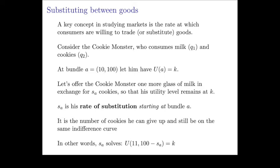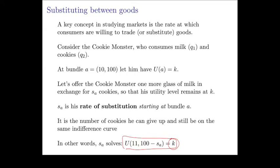In other words, it's the solution to the equation: U of 11 glasses of milk and 100 minus SA cookies is still equal to the utility level K. Now this rate of substitution is going to change — it's not going to be the same at every possible bundle. That's why we said this is his rate of substitution at the bundle A.